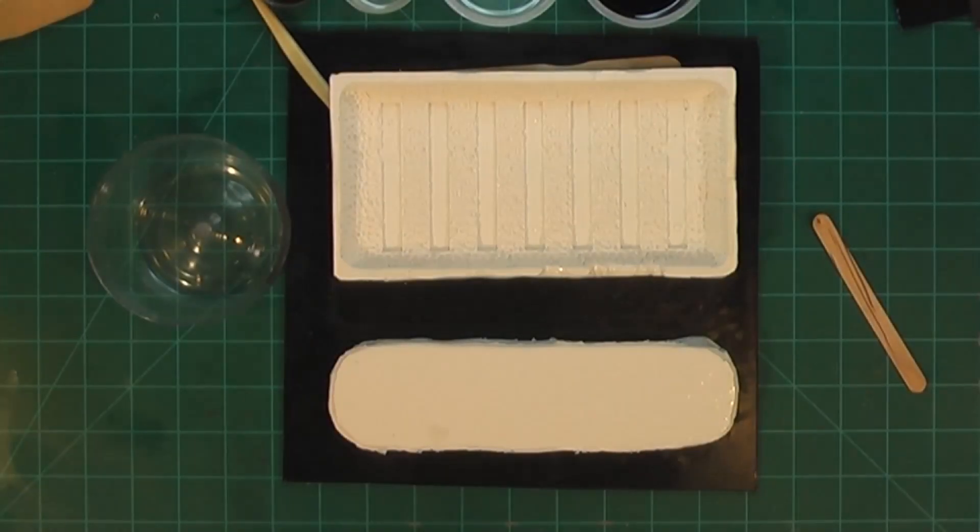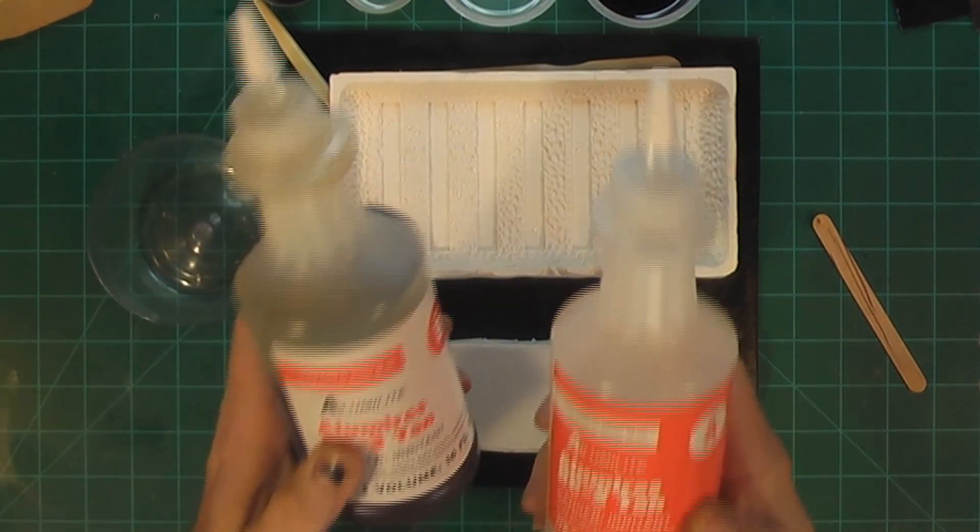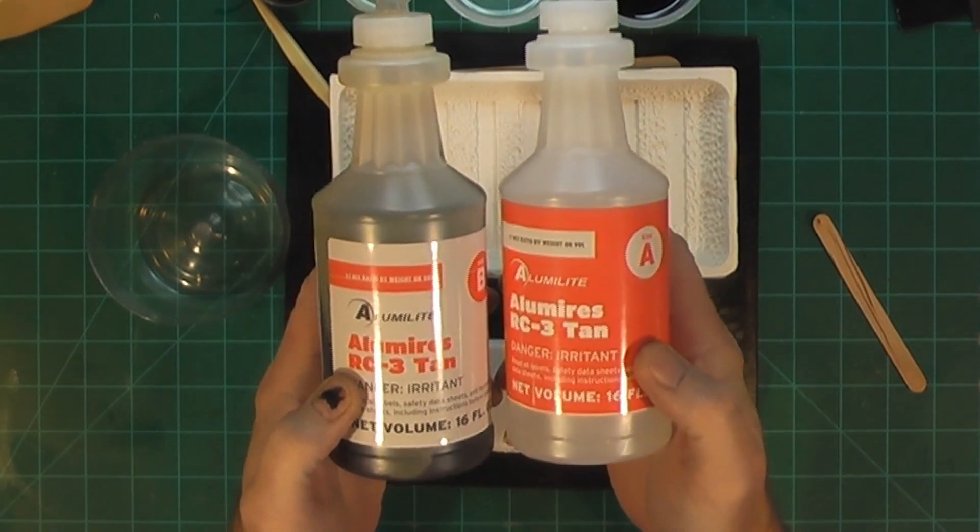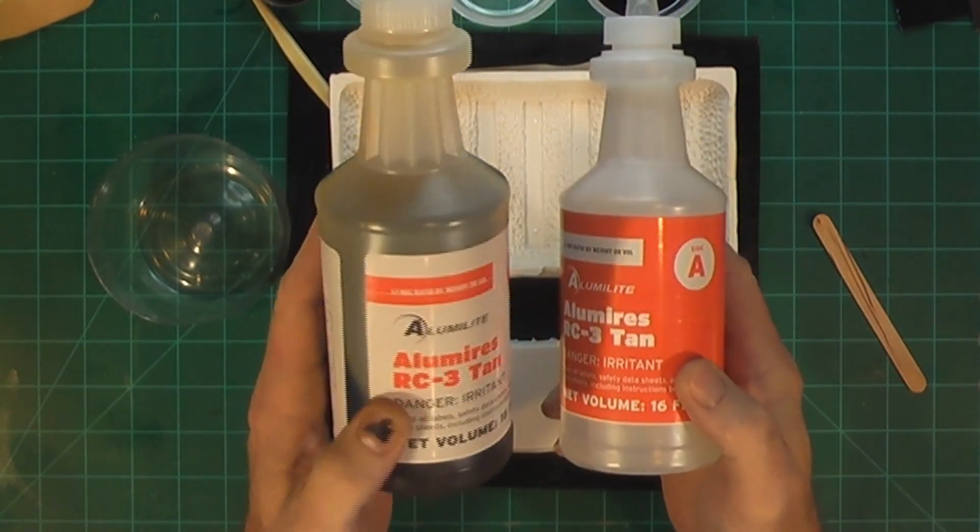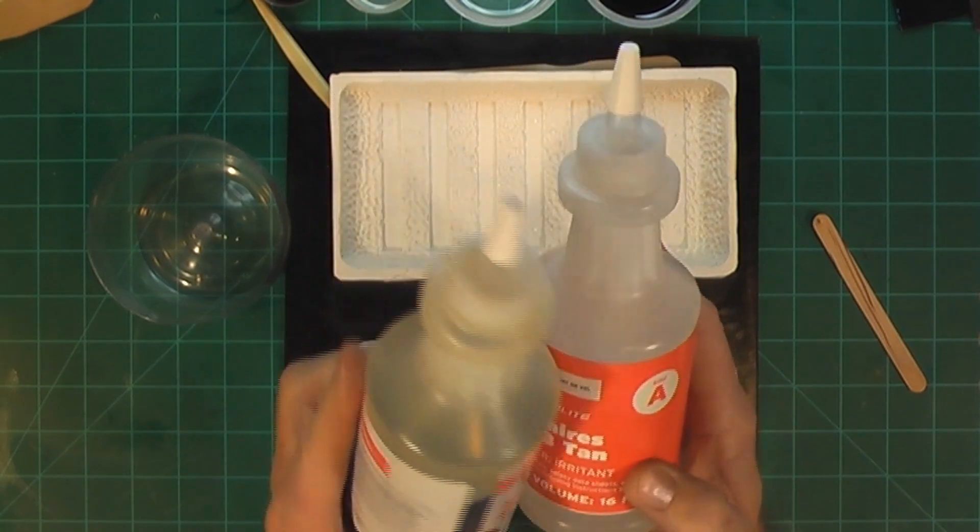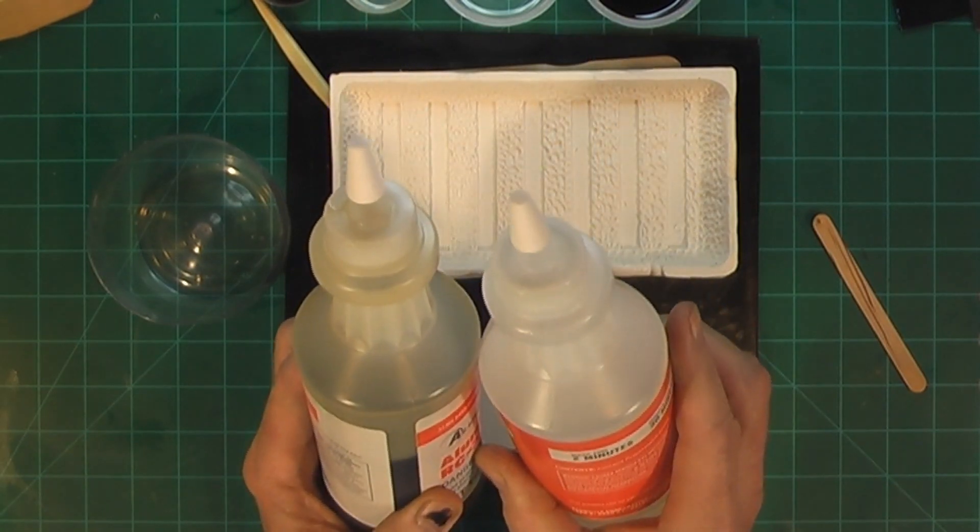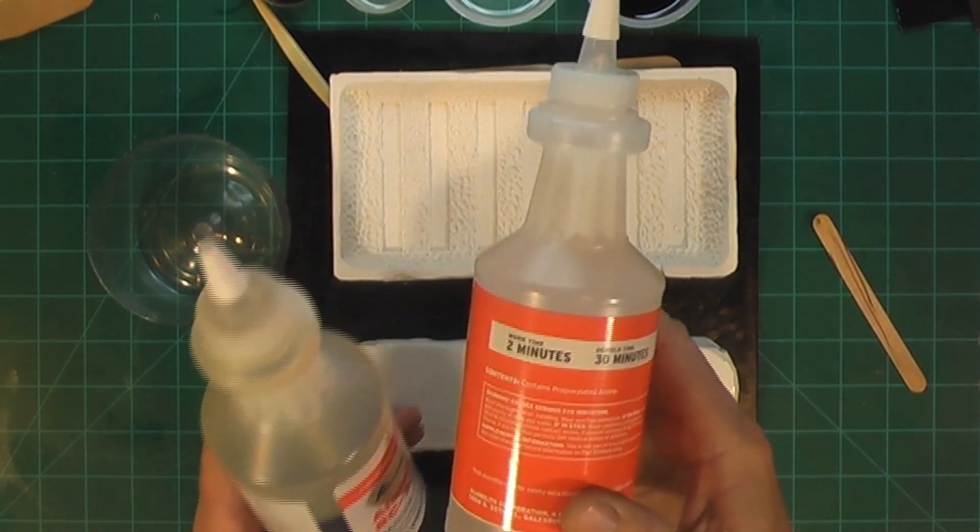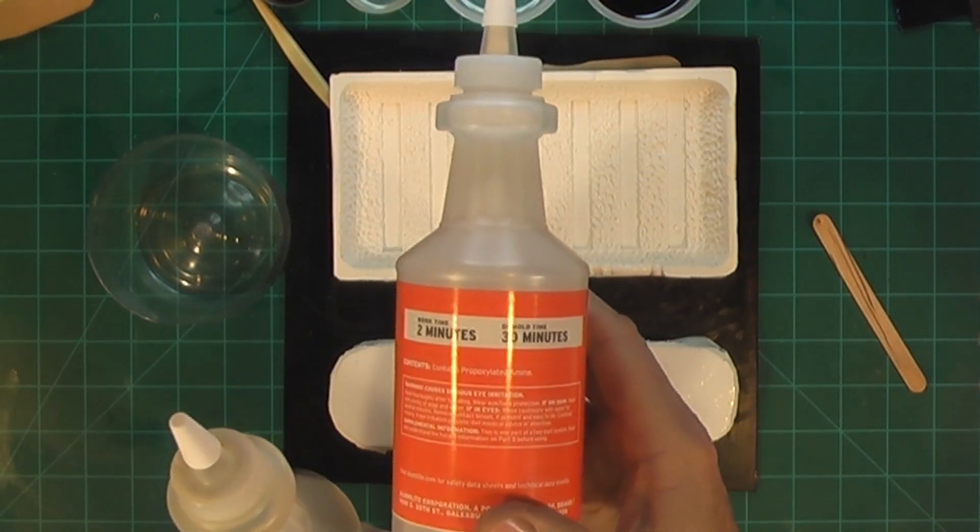So here we are ready to pour. We basically got to mix our resin up. It's a 50-50 mix. We have the Illuma Res Part A and Part B. This mix is 50-50. It only has about two minutes work time and about a 30-minute cure time.